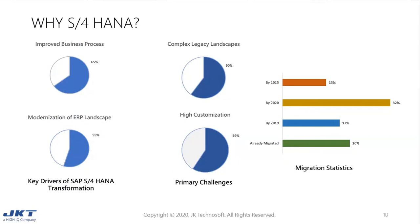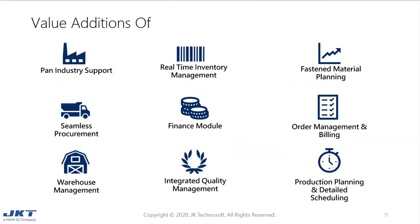In this slide, we have summarized the S4HANA migration stats as an answer to the big question: why S4HANA? As per the migration stats provided by SAP last quarter, 20% of SAP customers have already migrated to S4, and by end of this year, another 17%. By end of 2025, more than 80% of global SAP customers will be on S4HANA. The key drivers are improved business processes and modernization of ERP landscape, while the primary challenges are complex legacy systems and higher customizations. Key value additions include real-time inventory management, seamless procurement, and warehouse management.